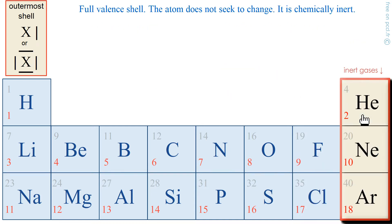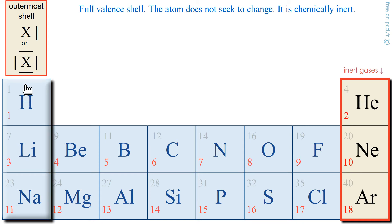Finally, the last column — I do not speak about it since it is that of inert gases. These atoms have no reason to evolve chemically; they have a full valence shell. That's it for this video. Thank you.